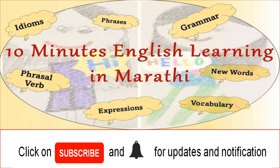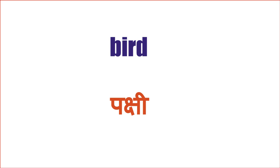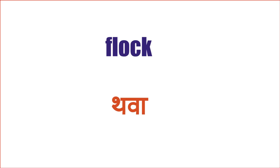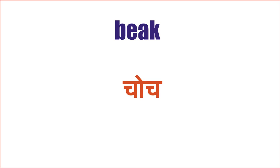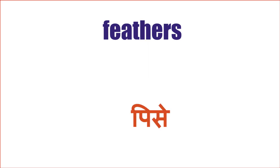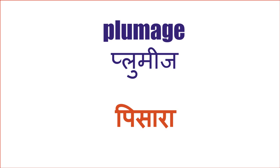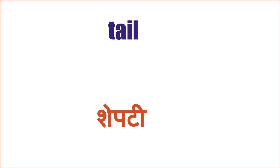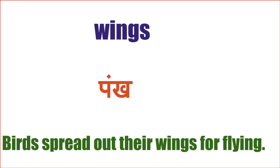Let's begin our video. Bird - Pakshi. Pakshancha thawa asto - Flock - Thawa. Pakshanna choch aste - Beak - Choch. Tash borobar kahi pakshanna tura asto - Crest - Tura. Javar javar sagrach pakshanna pise astat - Feathers - Pise. Plumage means pisara. Pronunciation lakshad gha - it's plumage. Tail - Shepti. Wings - Pankh. Birds spread out their wings for flying. Pakshi udhniya saati tiyanse pankh pasartat. Of course wings is plural, aani wing he ek vachanahe.